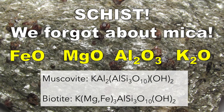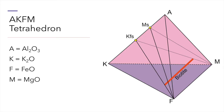We can thus visualize the compositions of common minerals in metapelites using an AKFM tetrahedron, where the vertices are A = Al2O3, K = K2O, F = FeO, and M = MgO. We could plot the composition of all the minerals mentioned so far in terms of these four components and draw tie lines connecting these phases in three-dimensional space. But dealing with a three-dimensional tetrahedron becomes difficult to visualize.